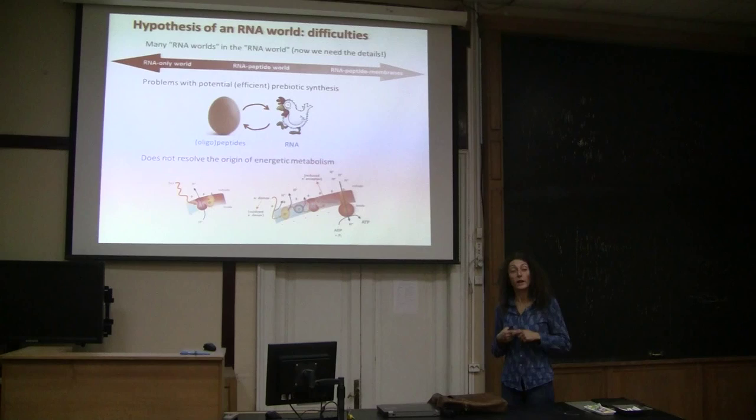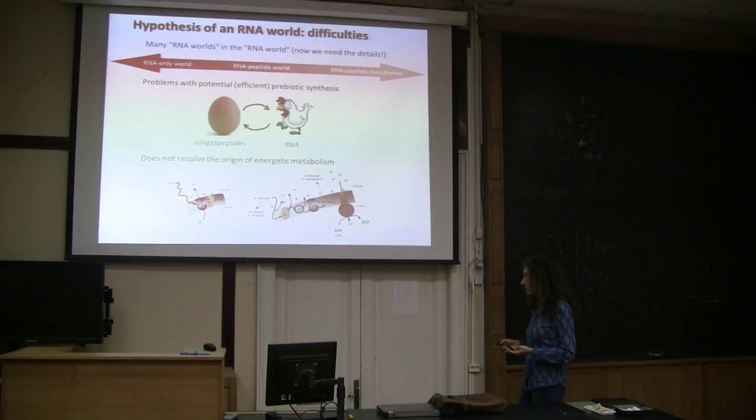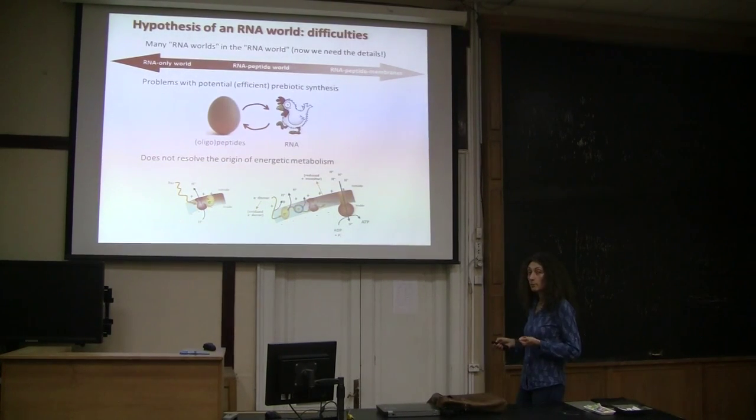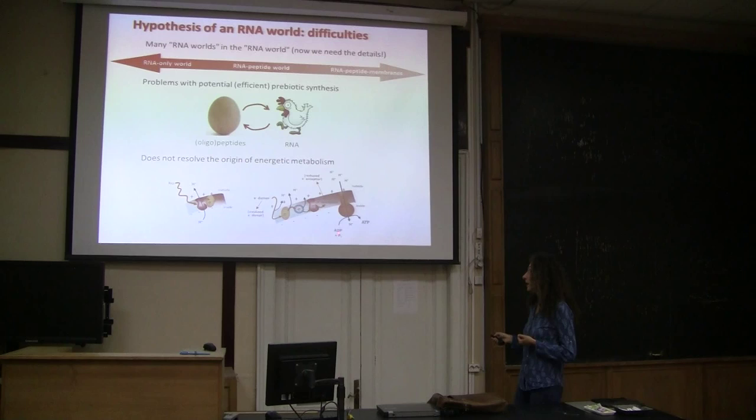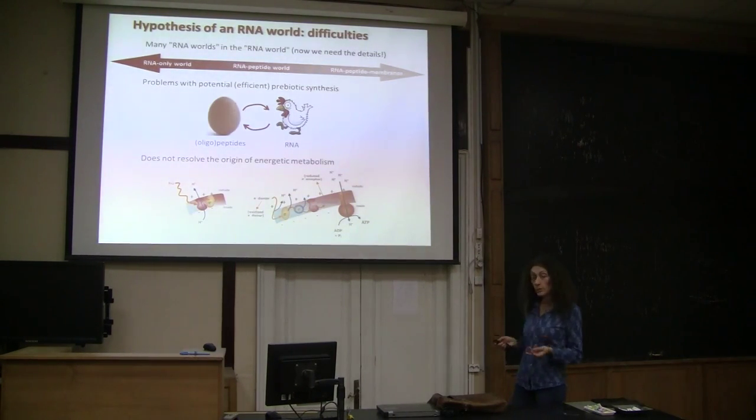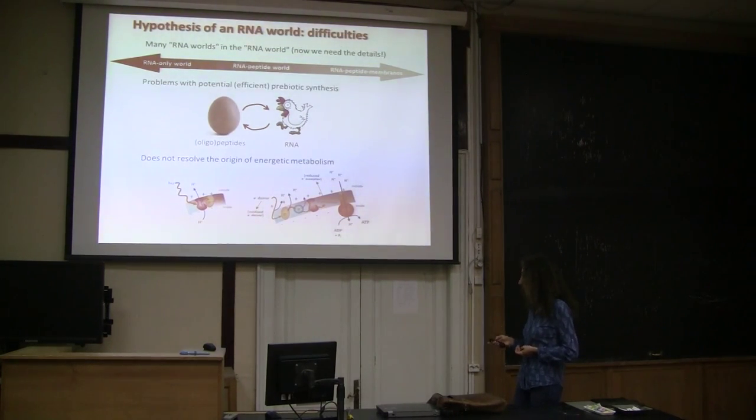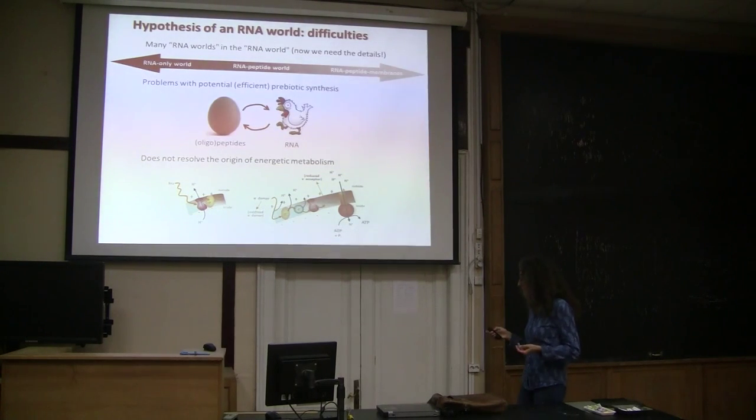Essentially, cell metabolism today, energetic metabolism, is based on the chemiosmotic theory, on the creation of a proton gradient across the membrane, and energy is gained or is stored in ATP by the passage of these protons along the gradient. So this is a general property that was shared by the first cells, and that is not explained by the RNA world. So this is an open question.